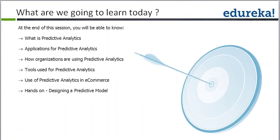Predictive analytics is about exploring historical data and understanding the relationships within it. Do you know the difference between predictive analytics and business intelligence? What is the difference between business analytics and business intelligence? Is there anyone who can tell me?